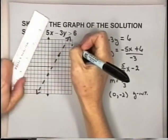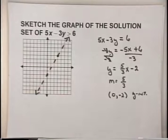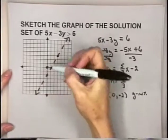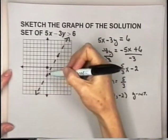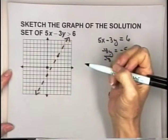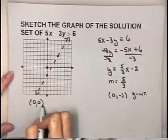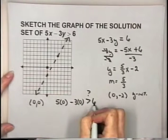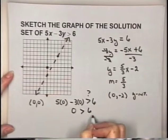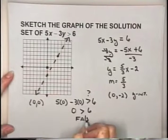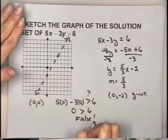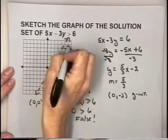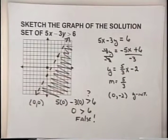We have two regions. Using the origin (0, 0) as our test point — it is not on the boundary line — substituting into the inequality: 5 times 0 minus 3 times 0 equals 0. Is 0 greater than 6? No, that is false. That tells us solutions are not in the region containing the origin. Since there is only one other region, we shade that region. Notice the points on the boundary line are not part of the solution because the line is dashed.